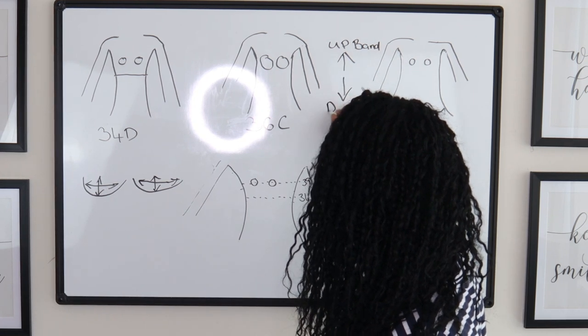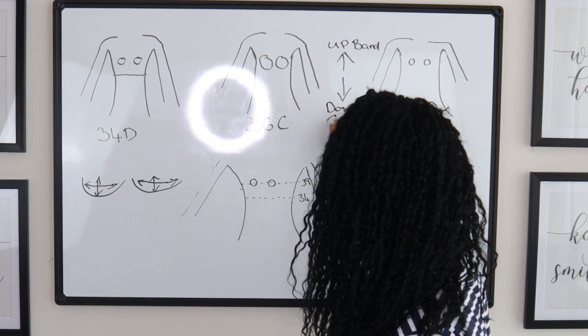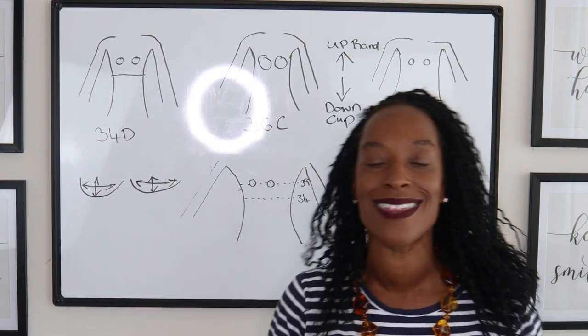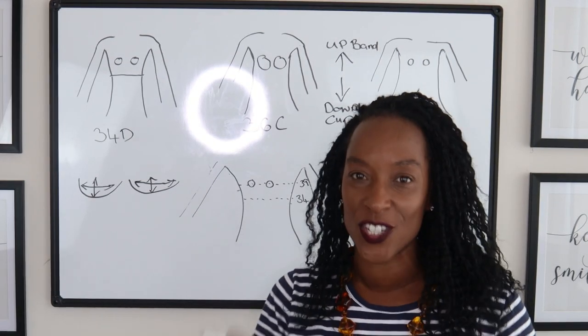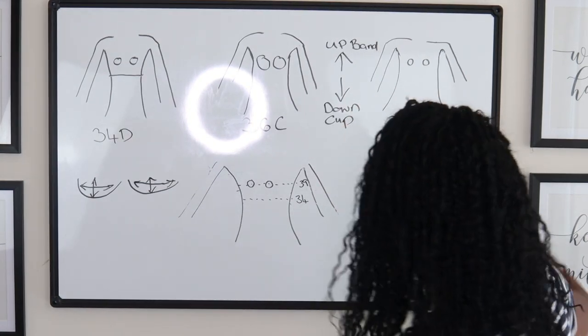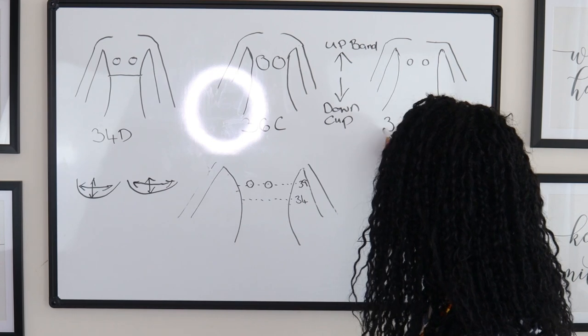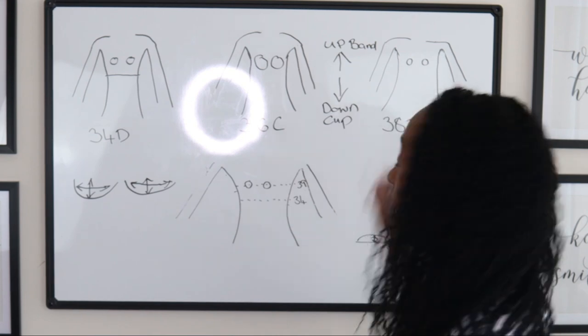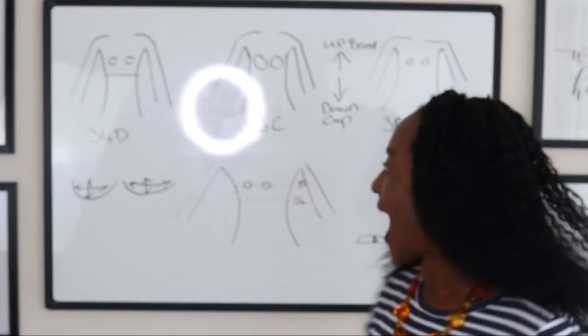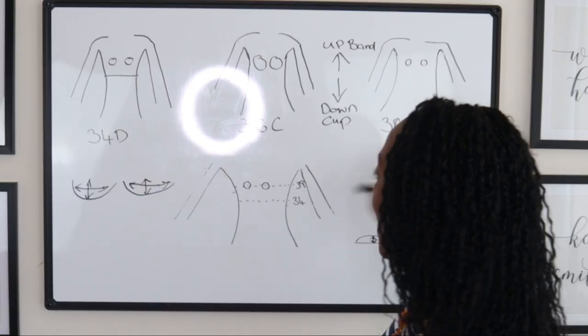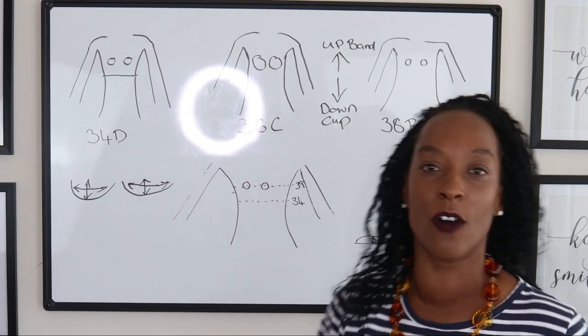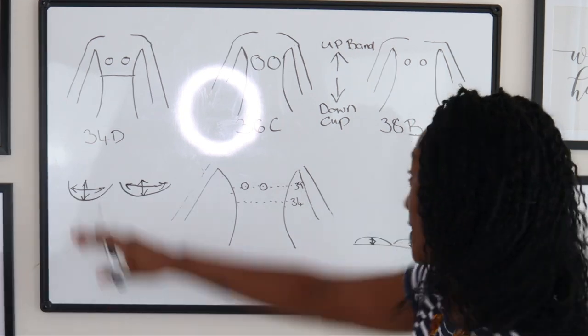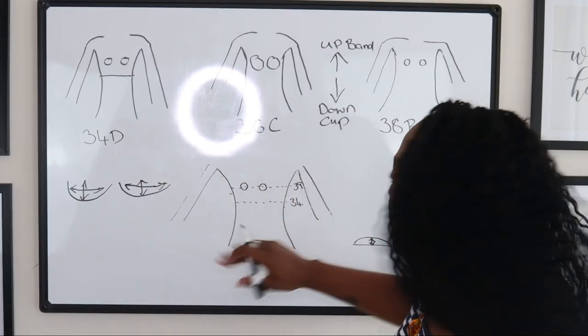We've got a 36C on and we're still thinking that might be just still a little bit too tight. So again, we're going to go up to 38 and this time we're going to go down to a B cup. This is an example of sister sizing.